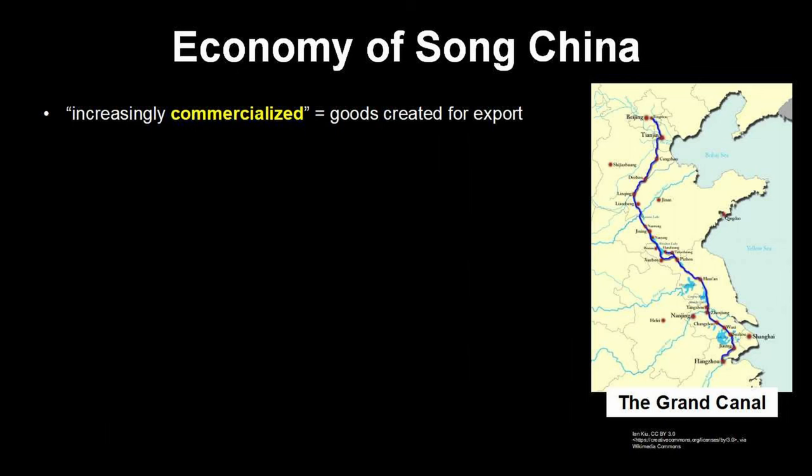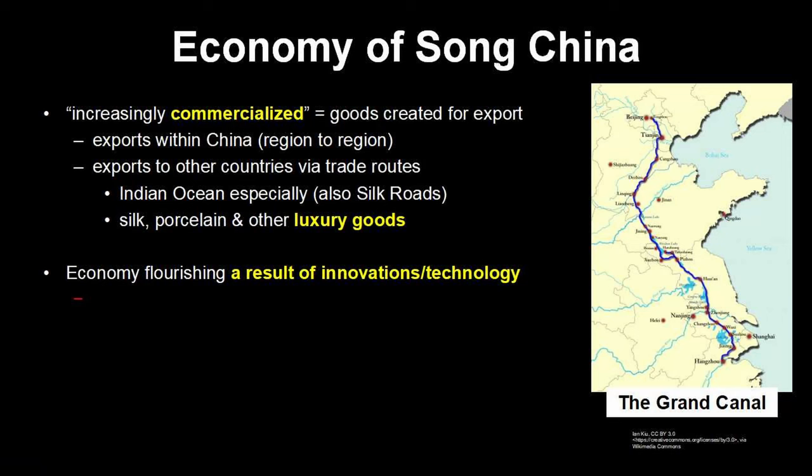The other three themes in Unit 1 — economics, technology, and society — each only appear once in the unit. Economics only appears as a major focus in 1.1, and it's all about how China's economy becomes increasingly commercialized — making stuff for export, either to other regions in China or to other countries. This is a big contrast to Europe's manor system, where almost everything is produced locally. Economically, China is ahead of the game during the Song Dynasty, and they have the biggest commercial economy in the world. They can do this largely through technological innovations such as the Grand Canal, which links northern and southern China together. The next theme is technology, which is only a thematic focus of 1.2, Dar al-Islam — though we could still compare China and Dar al-Islam as the two important regions for technology in Unit 1.